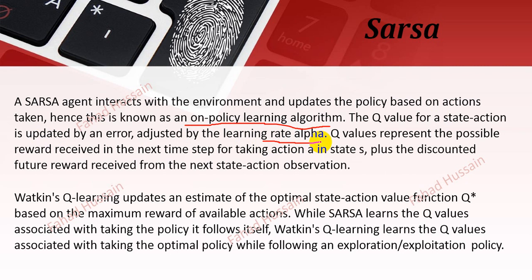Q-values represent the possible reward received in the next step for taking an action in the current state, plus the discounted future reward received from the next state-action observation. Q-learning can update and estimate the optimal state-action value function Q*, based on the maximum reward of the available actions, while SARSA learns the Q-values associated with taking the policy it follows itself.